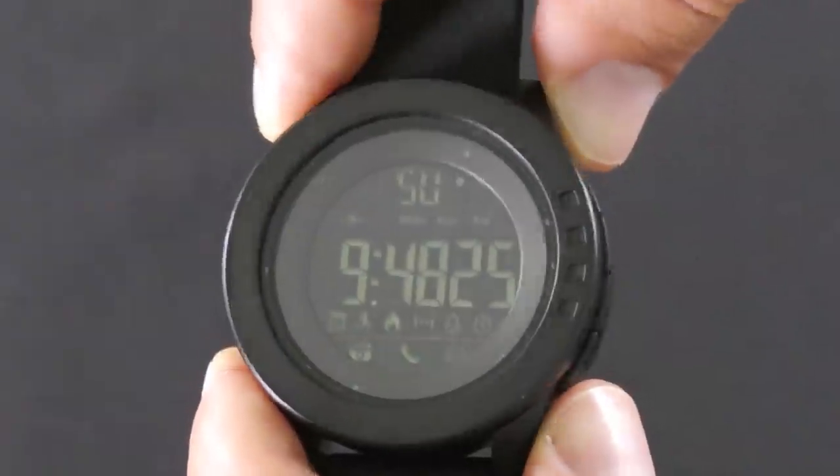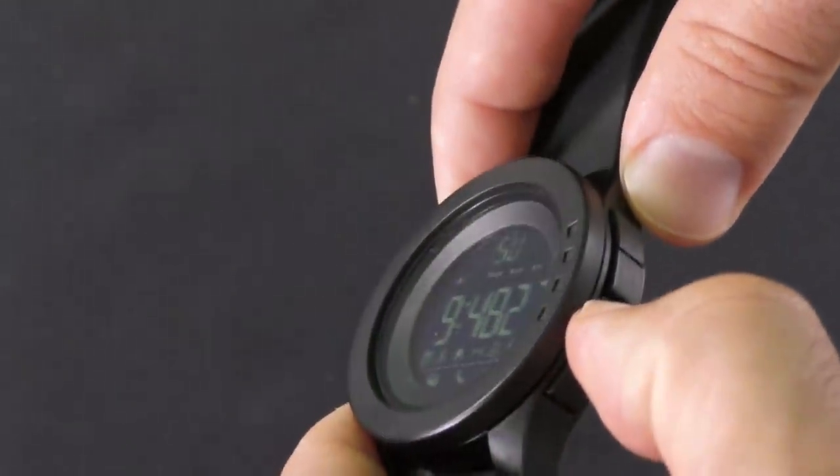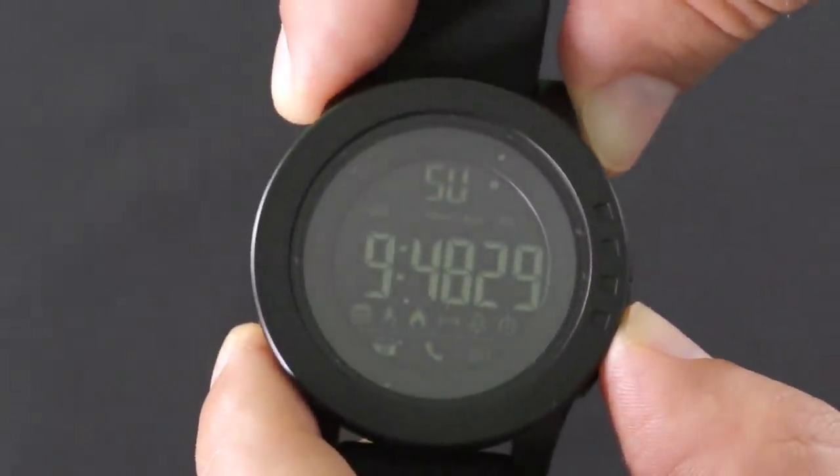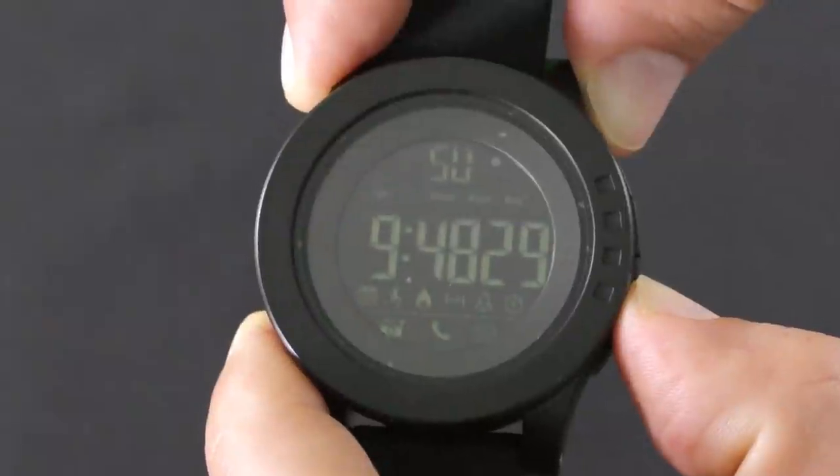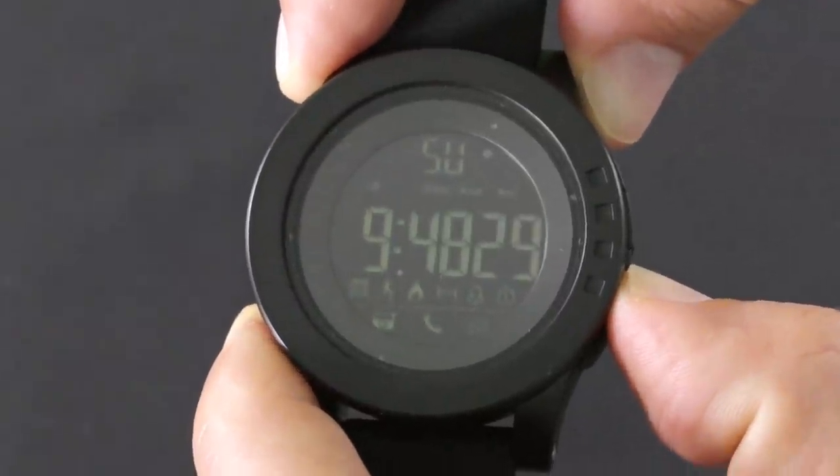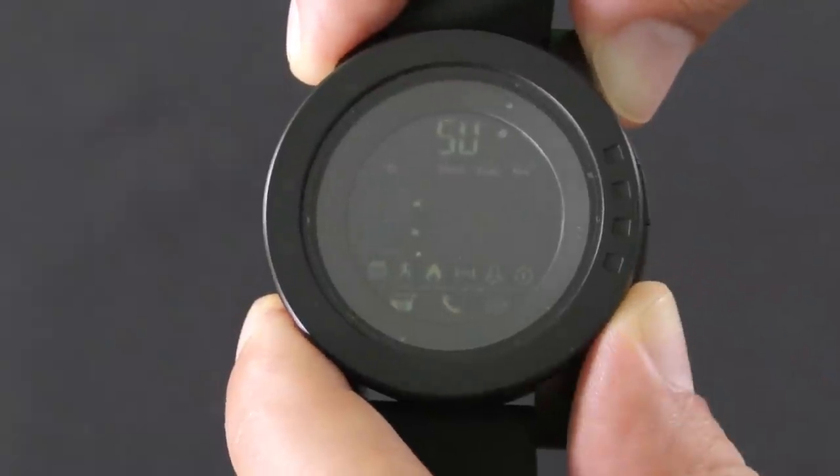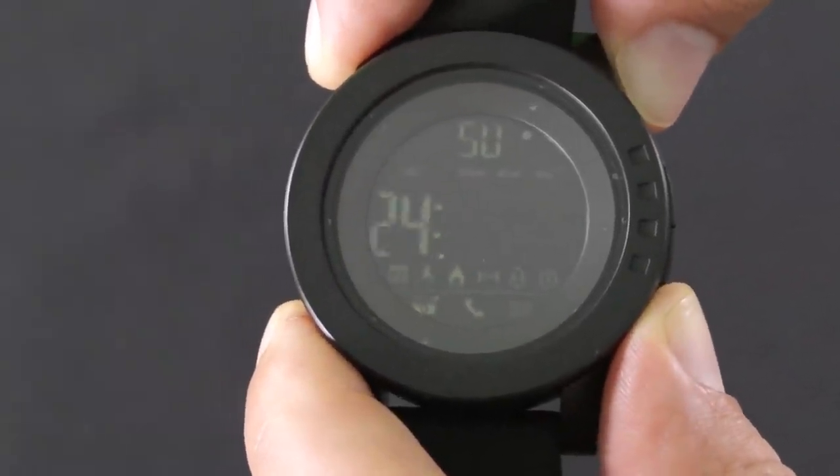If you want to adjust the time when the Bluetooth connection is turned off, go to the normal time mode and press button number two for three seconds. Now you can adjust the time starting with the hours, minutes, seconds, and 12 or 24 hours format. To switch between them press button number two, and to adjust them press button number one.